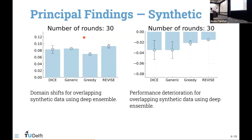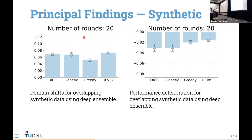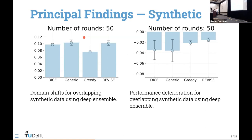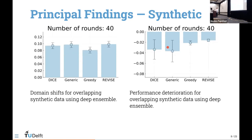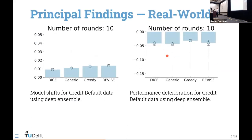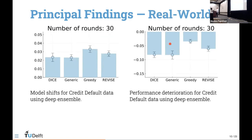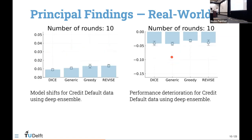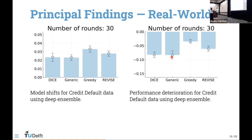These are some of our principal findings. On the left you can see how, as the procedure is repeated, we observe quite substantial domain shifts for all considered counterfactual generators. Consequently, we also observe a deterioration in out-of-sample model performance, measured in terms of F1 score on a holdout set. These are quite substantial values — a decrease in F1 score of up to four percentage points for real-world data, and in some cases up to ten percentage points reduction. Across the board, we observe substantial shifts.